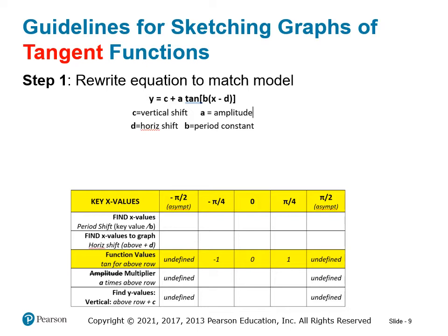Similar to what we did before, we're going to rewrite each equation to match the model. This equation looks just like the one for sine and cosine, so we have all the same key elements or key variables: A equals amplitude — though tangent and cotangent don't truly have amplitude, we still have a multiplier of the functional value, so we must consider it.